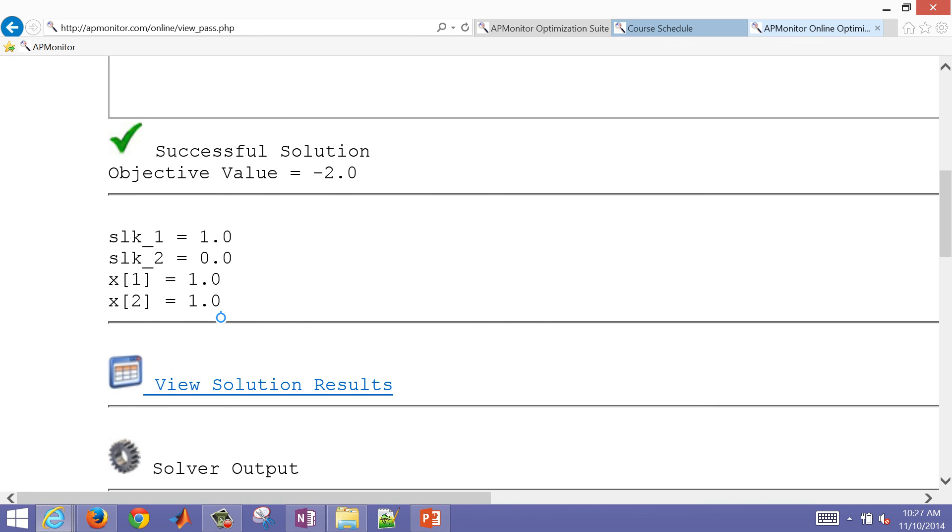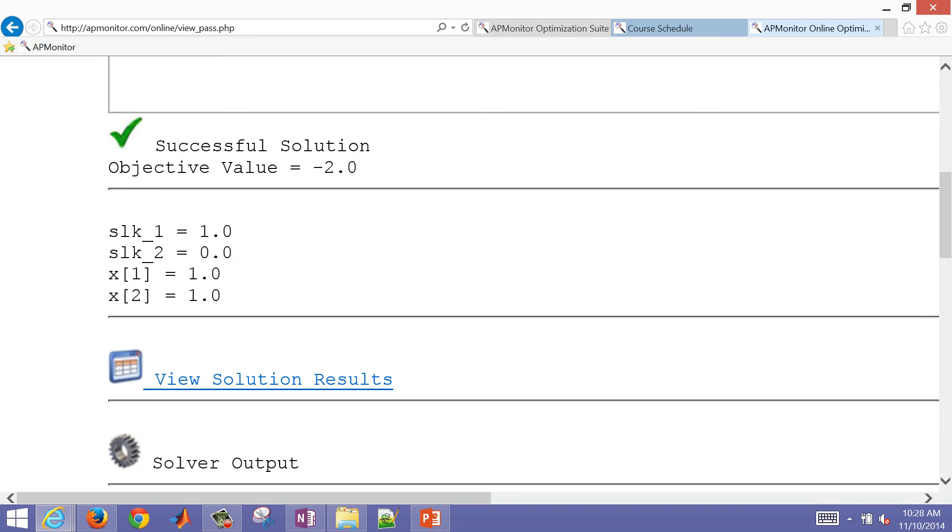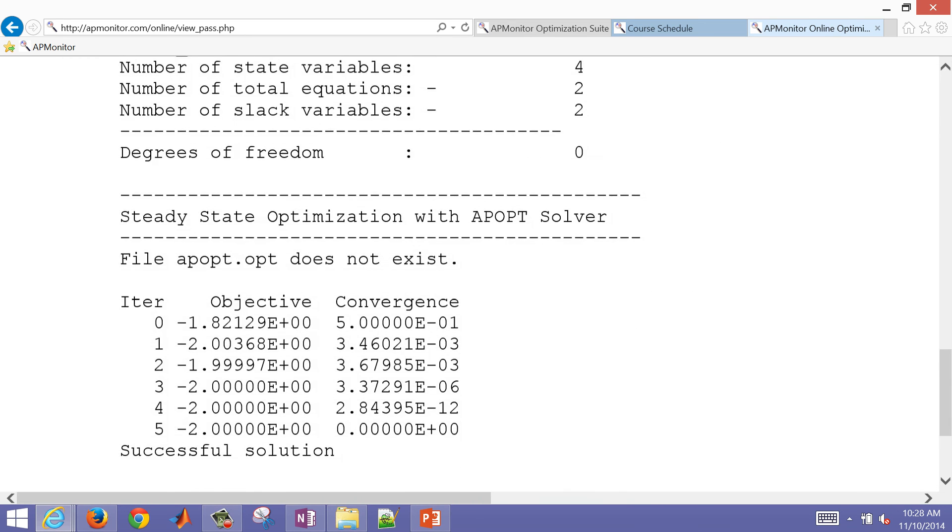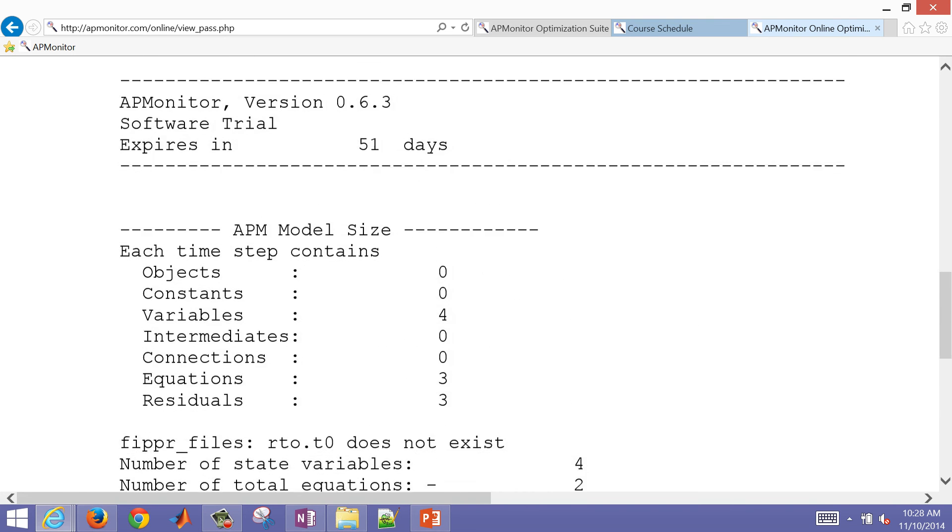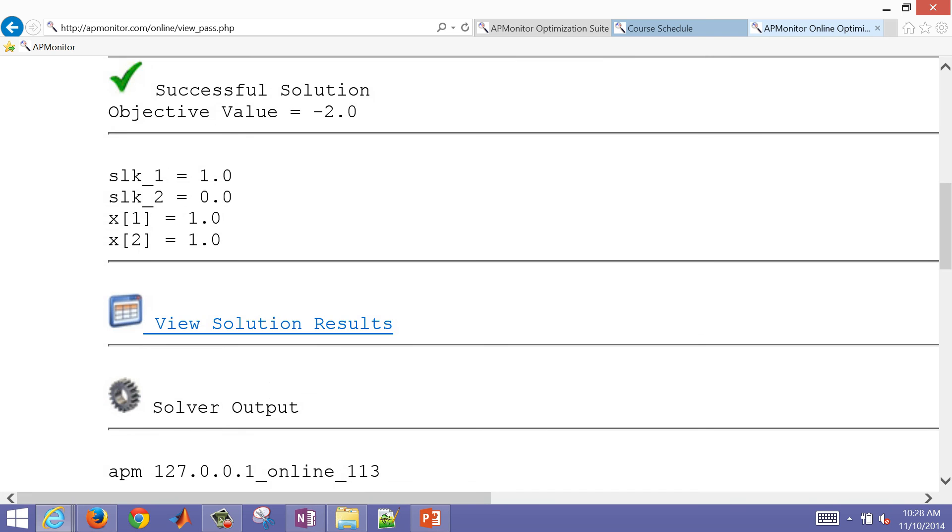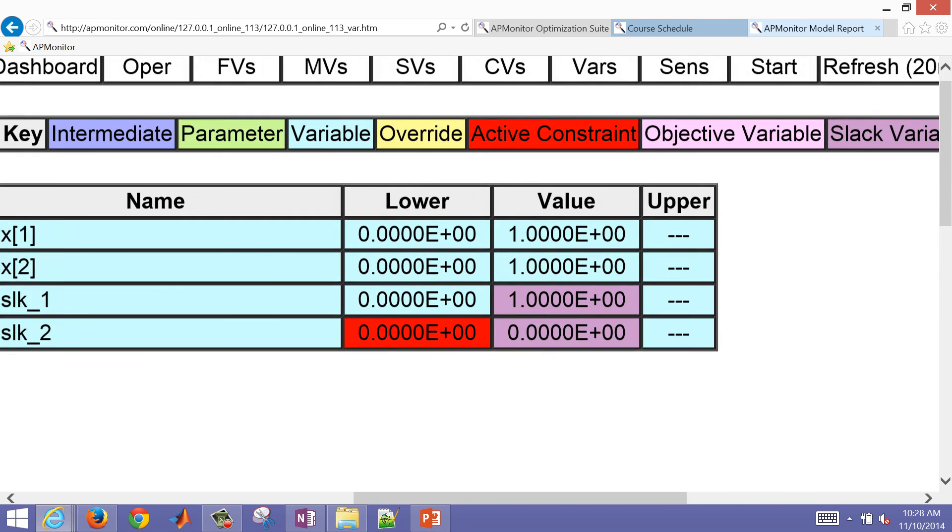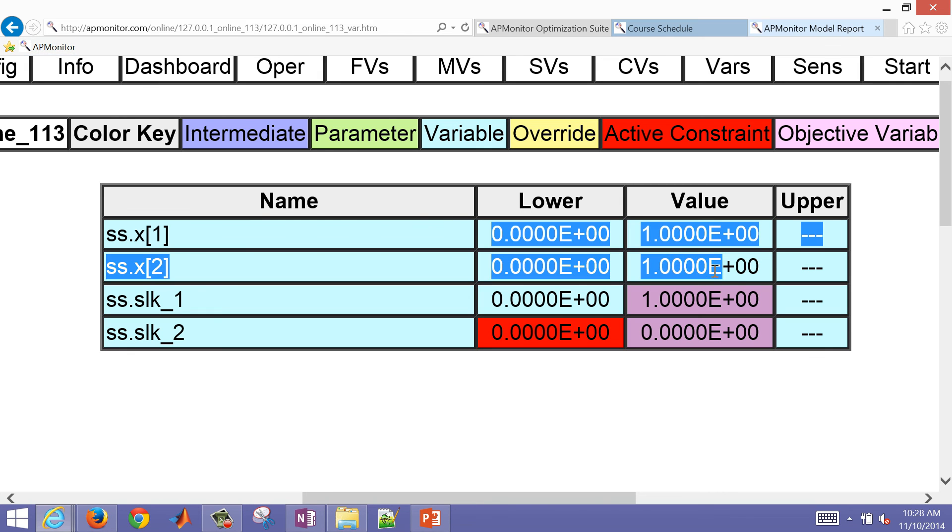And it says I had a successful solution. And that agrees with our graphical solution, which is x1 and x2 have to be equal to one. Let's just look at the solver output here. It says successful solution and it found our objective function. Let's take a look at that table as well. We can see that x1 and x2, they're both at a value of one.